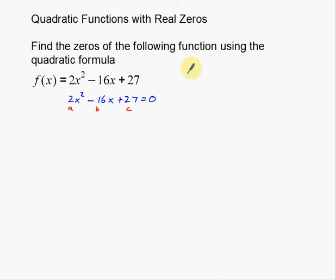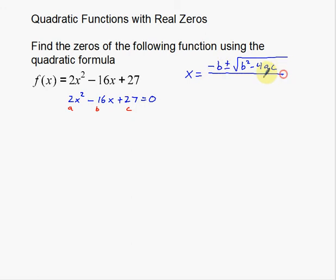Over here I'm going to write the quadratic formula. x equals — now this is something you should just commit to memory. It's such a useful formula, you're going to use it in a lot of your different math classes. x equals negative b plus or minus the square root of b squared minus 4ac, all over 2a. Just a handy little formula to memorize.